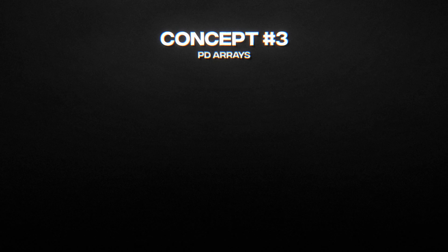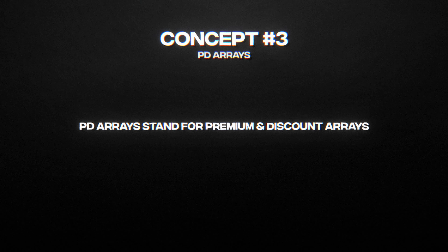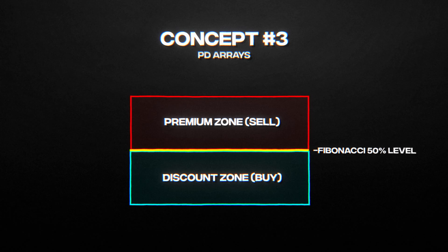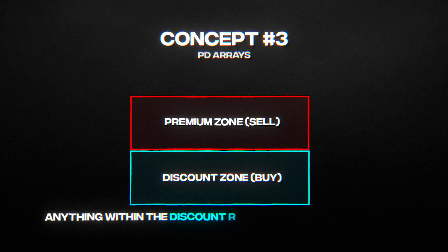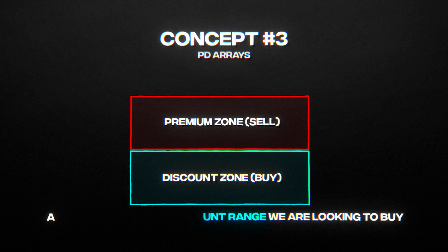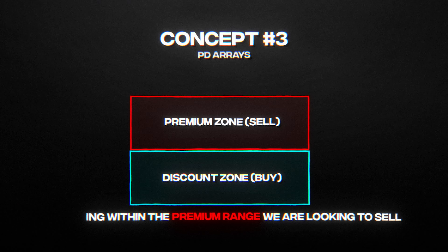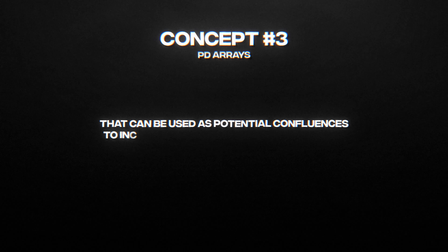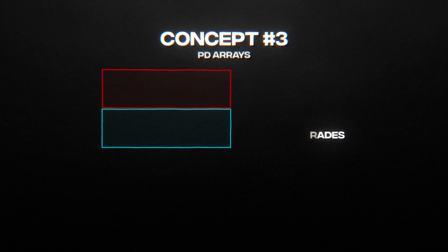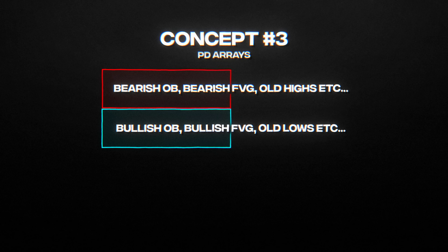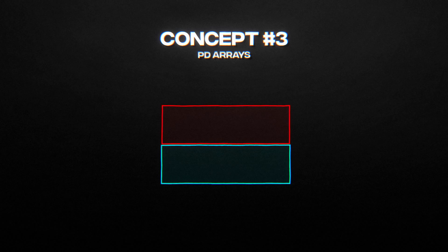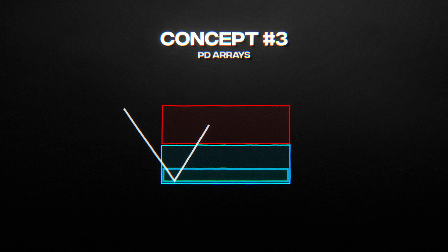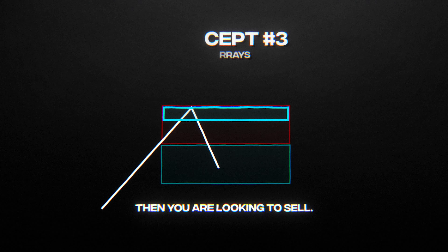The third concept is PD Arrays, which stands for premium and discount arrays. They are divided into premium and discount ranges, with premium ranges being above the midpoint — the main 50% Fibonacci level — and discount ranges being below it. Anything within the discount range, we are looking to buy; anything within the premium range, we are looking to sell. The word 'array' in PD Array represents points of interest (POIs) that can be used as confluences to increase trade probability. These arrays include order blocks, fair value gaps, old highs, old lows, and more. For example, if you see a bullish order block at a discount range, you look to buy from that order block as confluence. Similarly, if you see a bearish order block at the premium range, you look to sell at that order block.